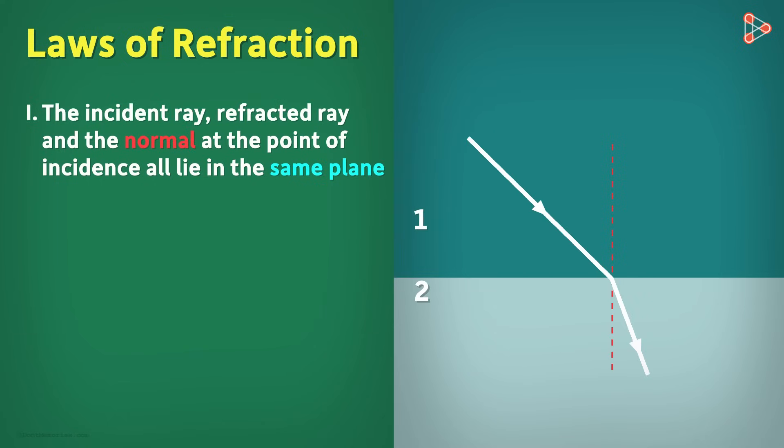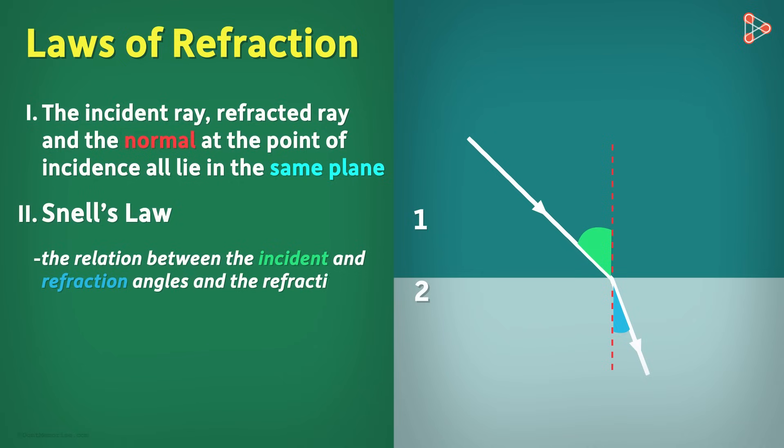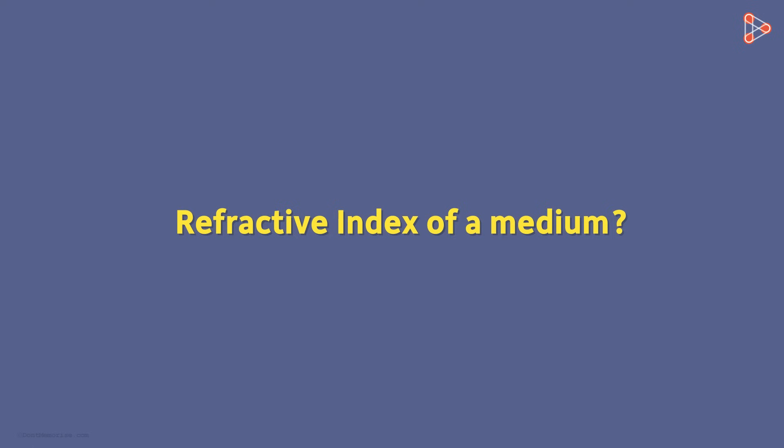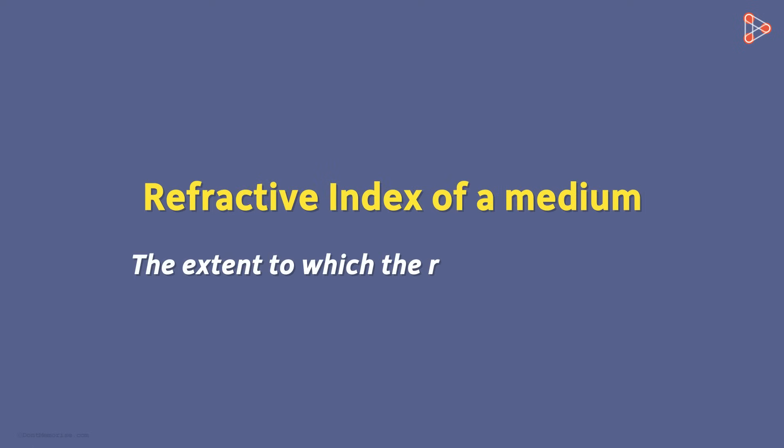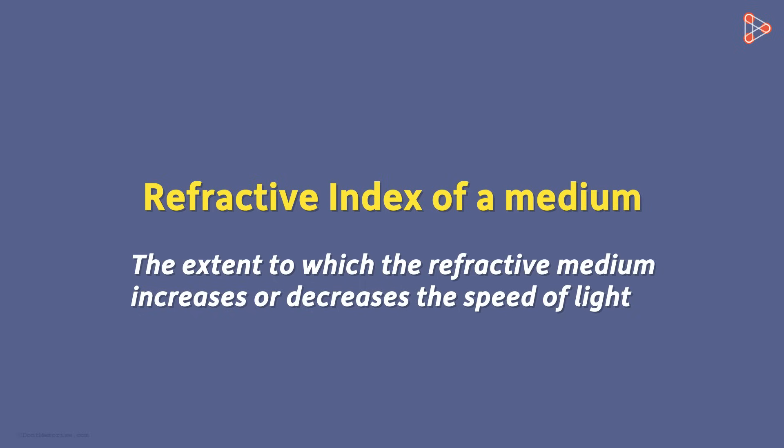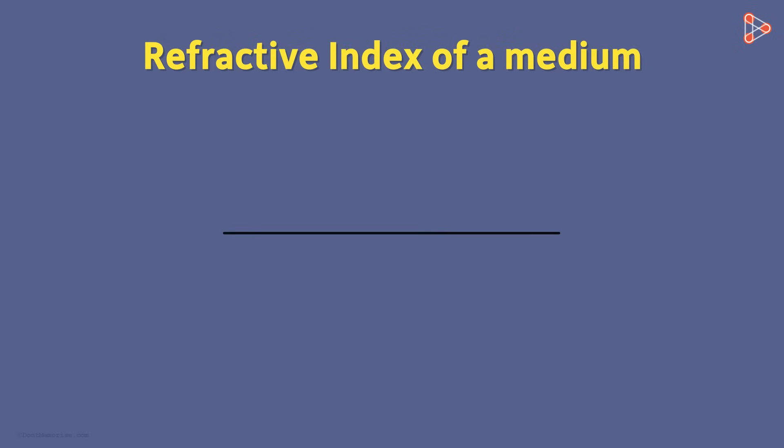What about the second law? The second law is also called Snell's law of refraction. Snell's law gives us the relation between the incident and refraction angles and the refractive indices of the mediums. What is the refractive index of a medium? It is the extent to which the refractive medium increases or decreases the speed of light. Mathematically, it is the ratio of the speed of light in the incident medium to the speed of light in the refractive medium.